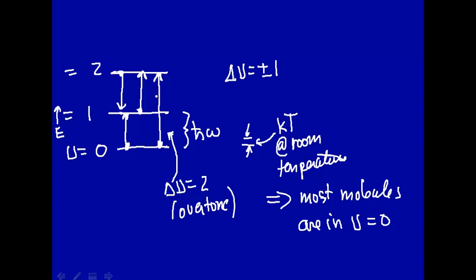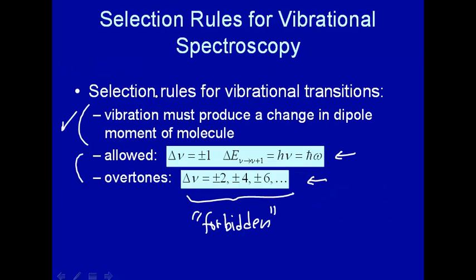So those are two selection rules for vibrational spectroscopy: first, you must produce a change in the dipole moment when vibrating in a normal mode; and second, Δν = ±1, except that it can also be ±2, ±4, ±6, and so on due to overtones.